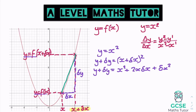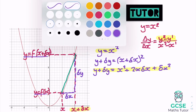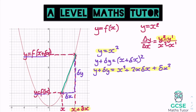We now have two expressions: y equals x squared, and y plus delta y equals x squared plus 2x·delta x plus delta x squared. Thinking about our original gradient formula, we take the second y coordinate and subtract the first. Taking y (which equals x squared) away from both sides, on the left we get delta y, and on the right we get delta y equals 2x·delta x plus delta x squared.